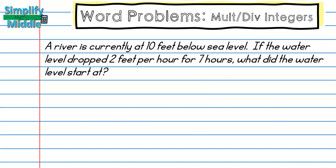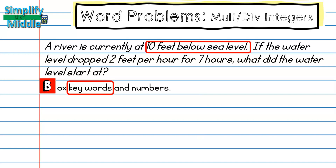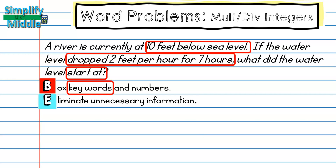Next example: a river is currently at 10 feet below sea level. If the water level dropped two feet per hour for seven hours, what did the water level start at? I'll box my keywords and numbers: 10 feet below sea level, dropped two feet per hour, for seven hours, and 'start at.' That phrase tells me which strategy to use. I'll eliminate unnecessary information — none here — then strategize. Since I want to know where I started and I know where I ended, the best strategy is to work backwards.